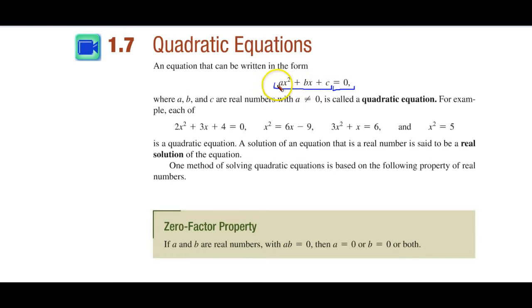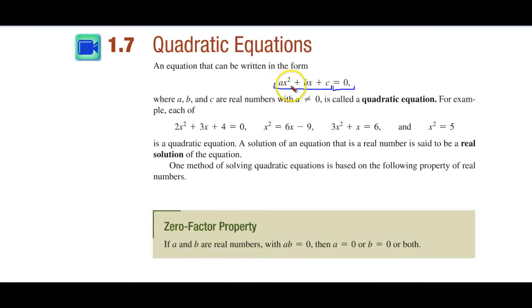The letter A in the equation is the numerical coefficient of x squared. The letter B in the equation is the numerical coefficient of x. And C is just that constant. Now, if we put something in this form, we may be able to factor it, and that's going to lead us to the zero factor property. Here are some examples of quadratic equations — notice the x is to the second power.